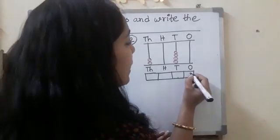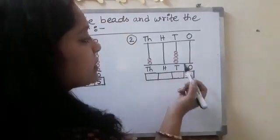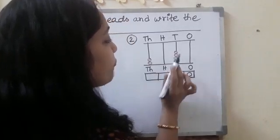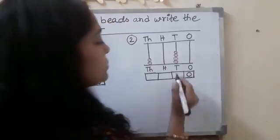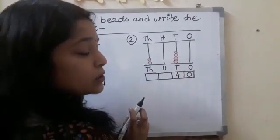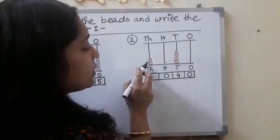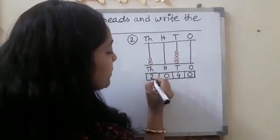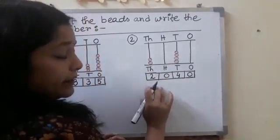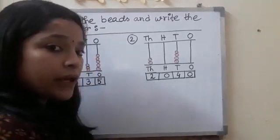So you can write here zero. After that, tens. Things make one, two, three, four. Here are four beads. You can write four. In hundreds there are no beads, so you can write here zero. After that, thousands - one, two. So you can write here two. And we are getting a new number again. The number is two thousand forty.